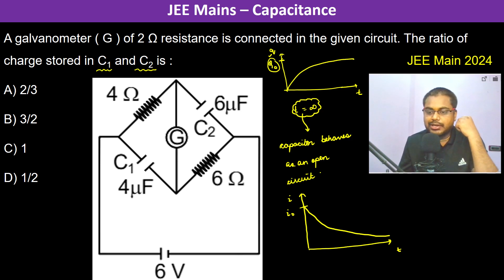Current is actually zero. The capacitor behaves as an open circuit. This galvanometer is having two ohms resistance.